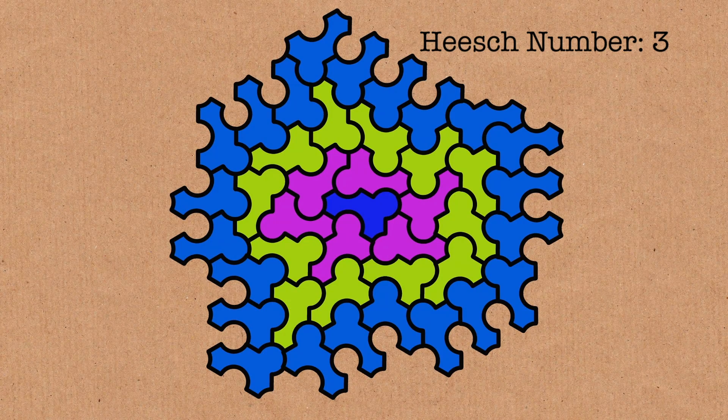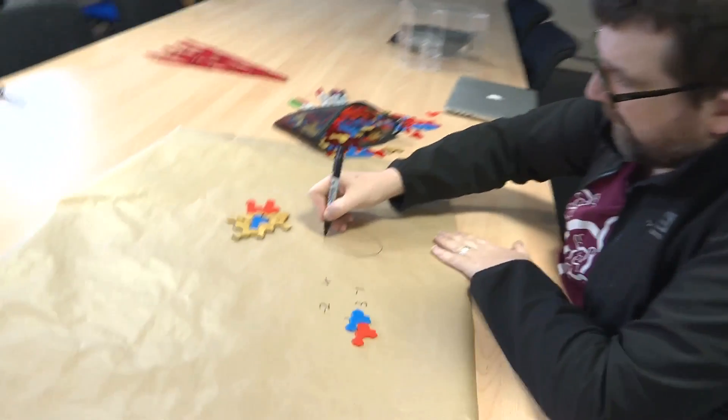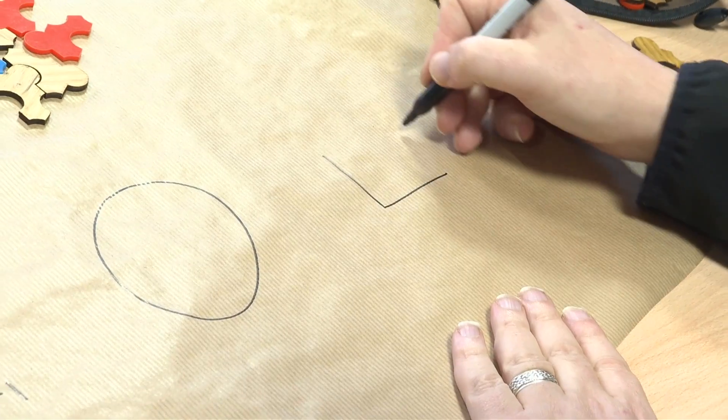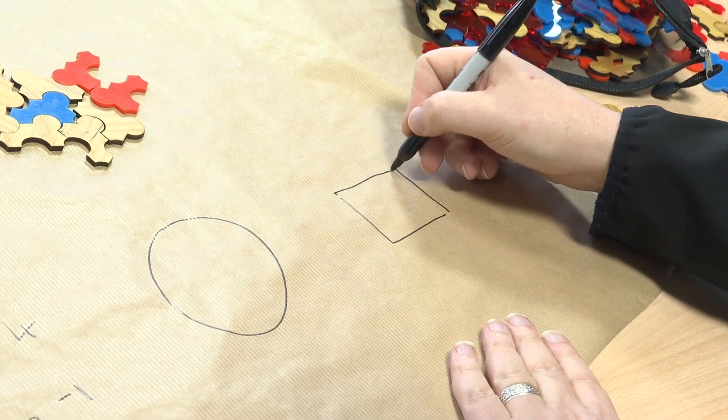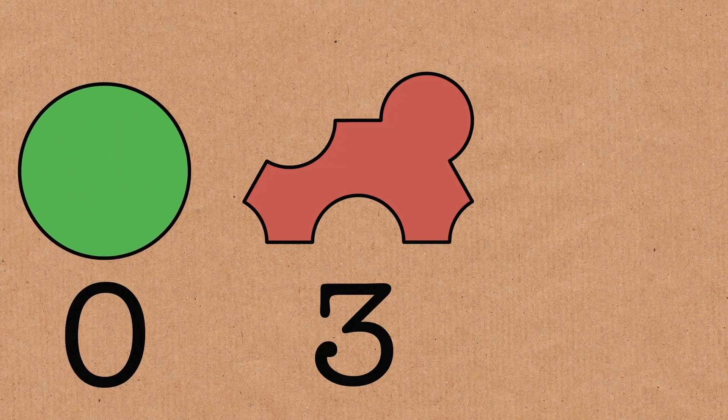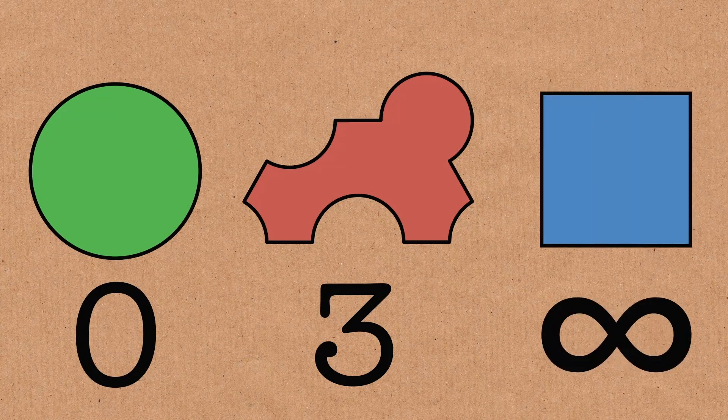We can ask, what other numbers can be Heesch numbers? What about a circle? What's the Heesch number of a circle? So when you surround it, it has to also be touched at every edge — you really need to surround it properly. So the circle, its Heesch number is zero. Another simple example is the square. You could do that forever, so the Heesch number is infinity. This shape here lies somewhere between the circle with zero and the square with infinity.